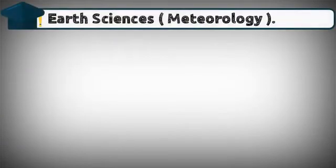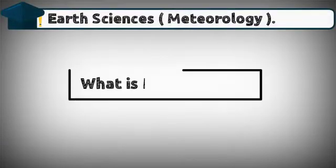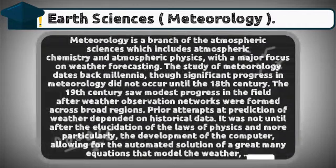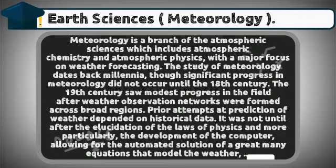Earth sciences — meteorology. Meteorology is a branch of the atmospheric sciences, which includes atmospheric chemistry and atmospheric physics, with a major focus on weather forecasting. The study of meteorology dates back millennia, though significant progress in meteorology did not occur until the 18th century.